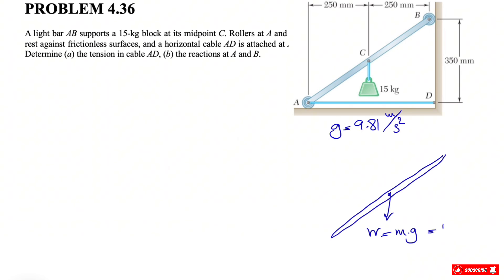At two points A and B, we have a roller. When we have a roller, what we have is a normal force. Let's call this A, and here we will have a normal force B. We don't have any force in the x direction, since we know that these surfaces are frictionless.